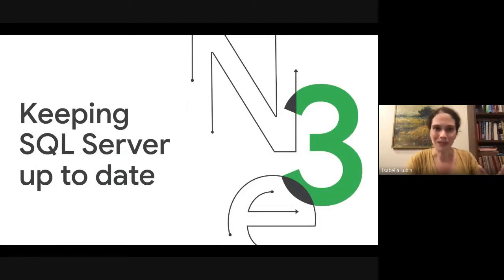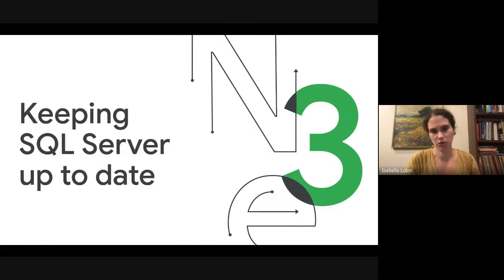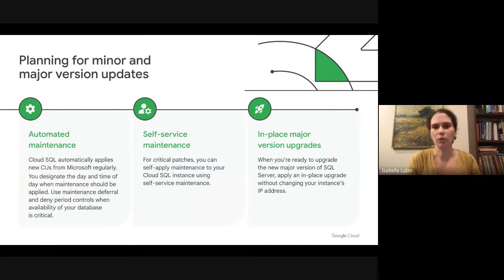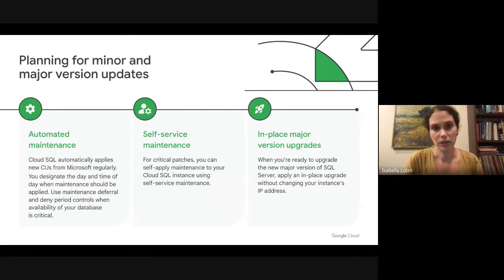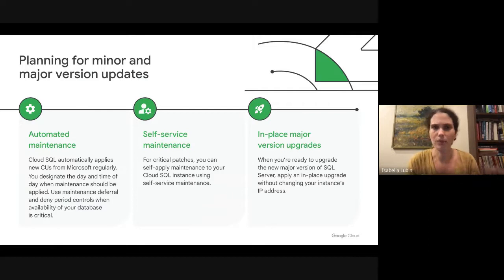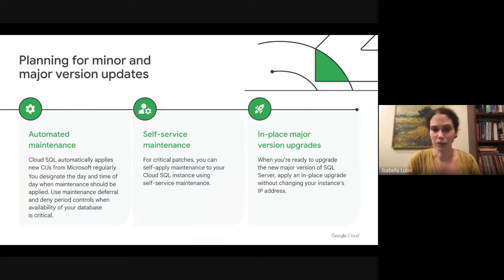Once you've planned your migration and are monitoring your Cloud SQL instance, how do you make sure Cloud SQL stays up to date? Cloud SQL performs automated maintenance for you. We take the newest cumulative updates from Microsoft and automatically apply those to your instance. You can designate the day and time that maintenance should be performed, and you can use maintenance deferral and deny periods if your application cannot take a maintenance downtime event. Maintenance for SQL Server takes on average under 120 seconds. If there's a critical update, you can apply self-service maintenance patches to ensure your instance gets updates when you want them.